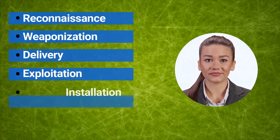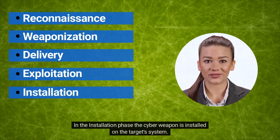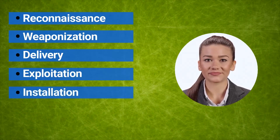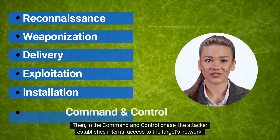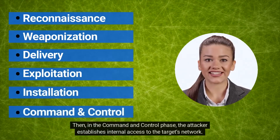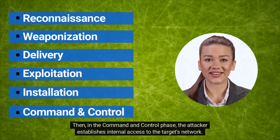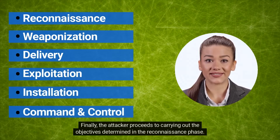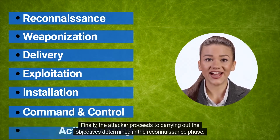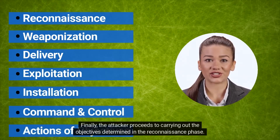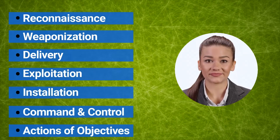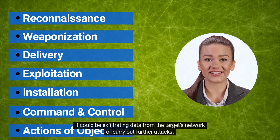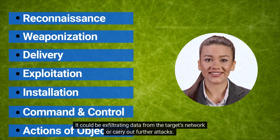In the exploitation phase, the cyber weapon lands on a system. In the installation phase, the cyber weapon is installed on the target's system. Then in the command and control phase, the attacker establishes internal access to the target's network. Finally, the attacker proceeds to carrying out the objectives determined in the reconnaissance phase, which could be exfiltrating data from the target's network or carrying out further attacks.